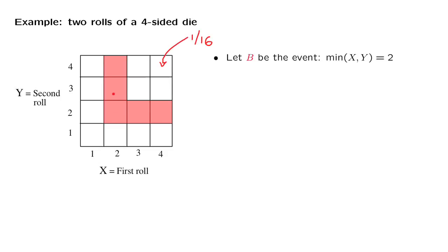So a 2, 2, or a 2, 3, a 2, 4, then a 3, 2, and a 4, 2. All these are outcomes in which one of the dies has a value equal to 2, and the other die is at least as large.